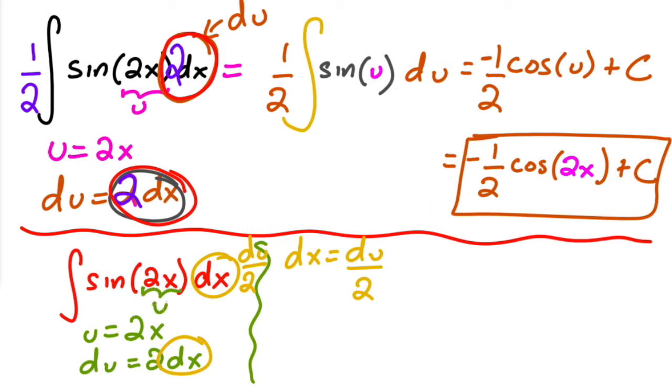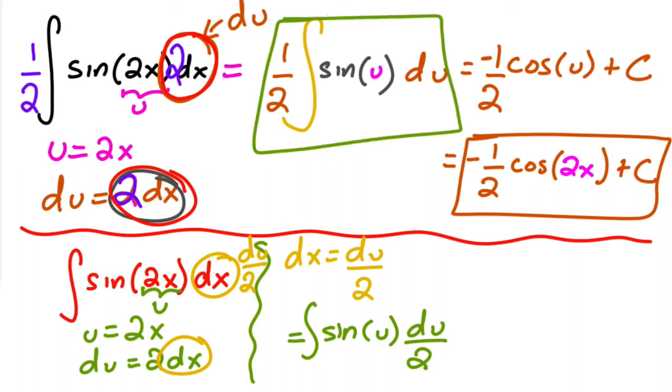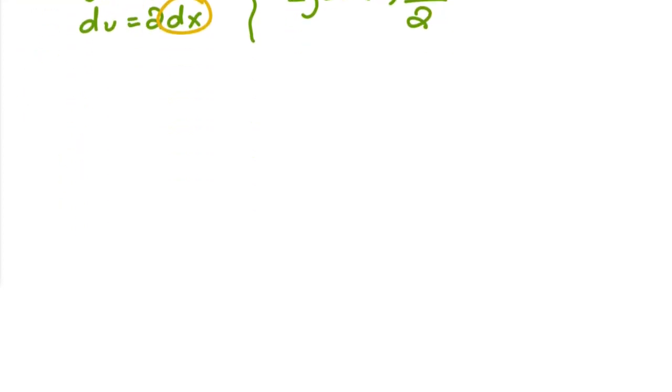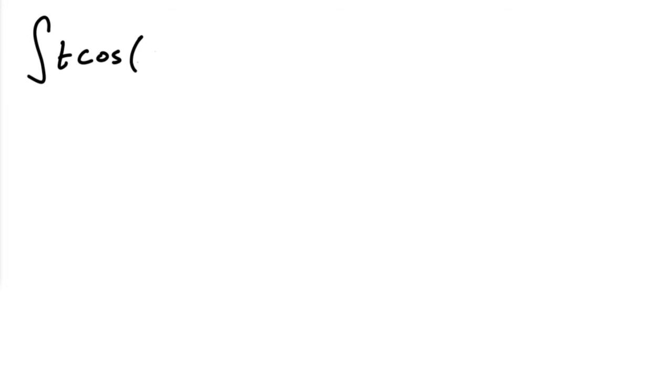And so then you can switch this one for du over 2 instead. And then this one would equal to u. And so then the integral would equal to the integral of sine of u, and then this would be du over 2. And so notice this is the same, you can take the two outside, and that would be exactly the same as this one. So it's really up to u. Okay.